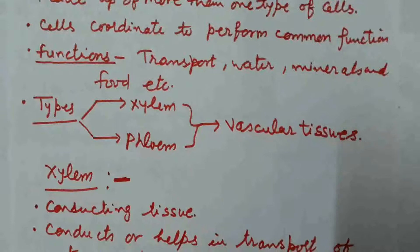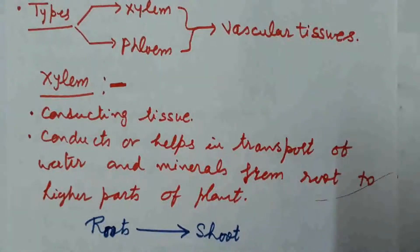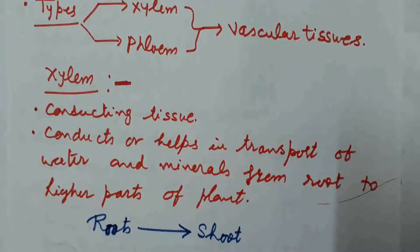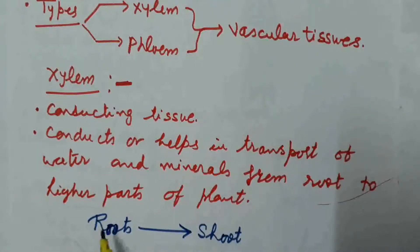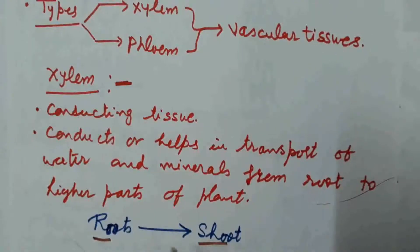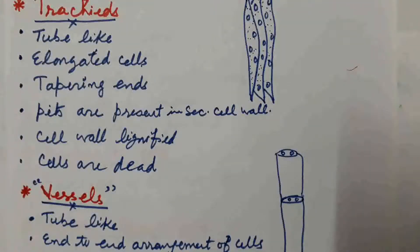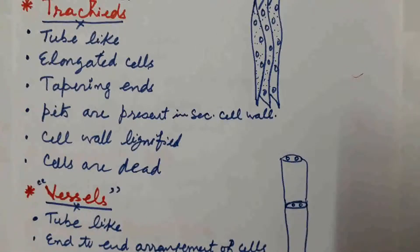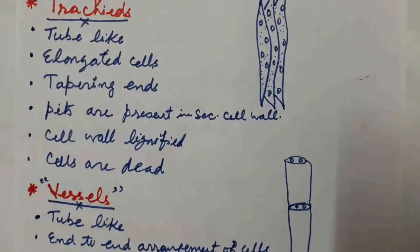Xylem is a conducting tissue. It helps in transport of water and minerals from roots to higher parts of the plant. Water and minerals are absorbed from the soil by roots, and through the xylem channel, water and mineral salts are transported in an upward direction. There are four types of cells which constitute the xylem: tracheids, vessels, xylem parenchyma, and xylem fibers.